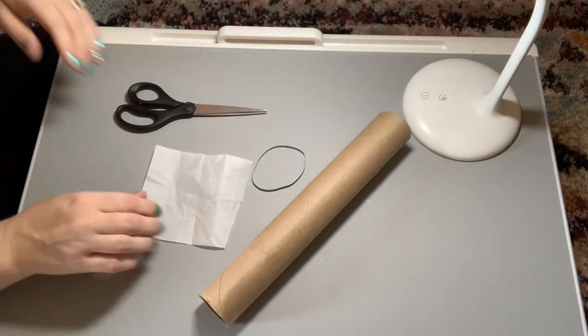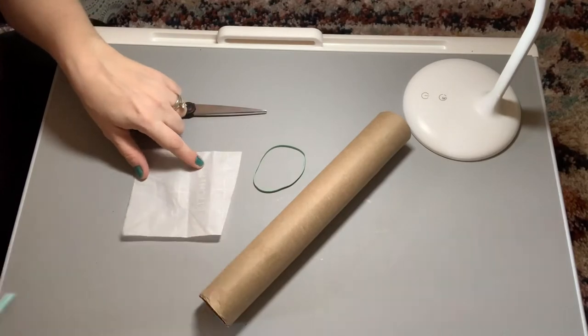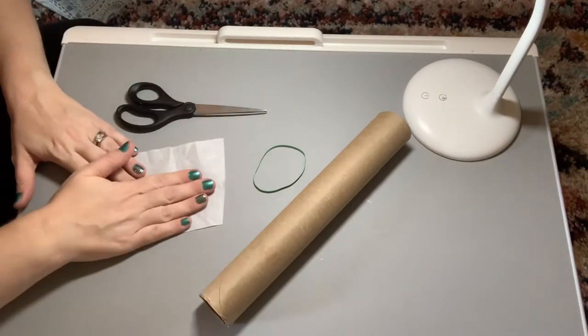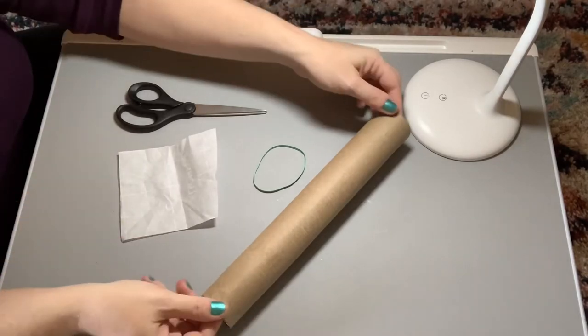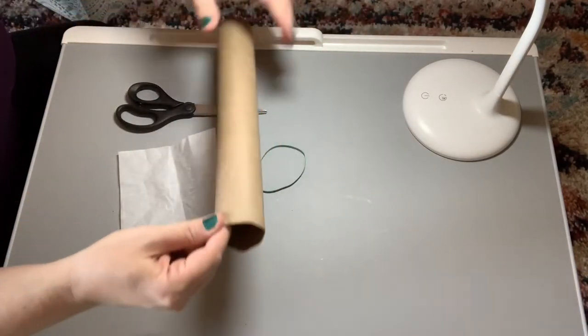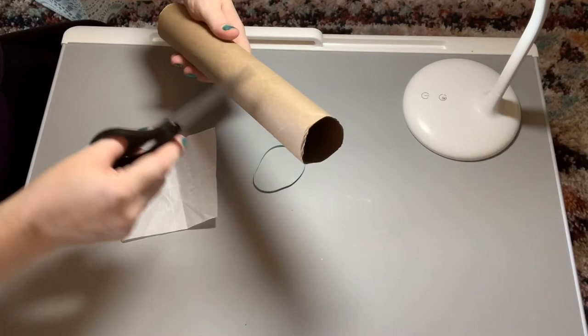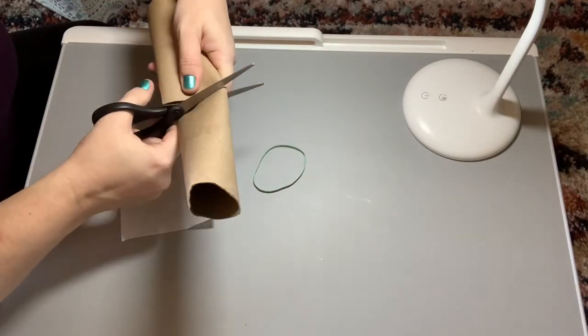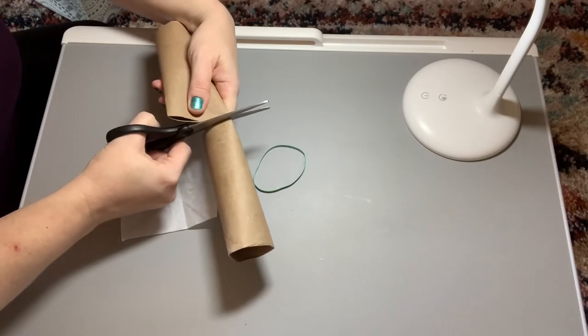So you'll want to cut a little square of either parchment paper or tissue paper, whatever you have. Cut a little square first. And then if you have a longer tube, you can actually cut it in half and you get two kazoos out of it. If you like, you can keep it long, but why not make two, right? Then you can play along with somebody else in the house.